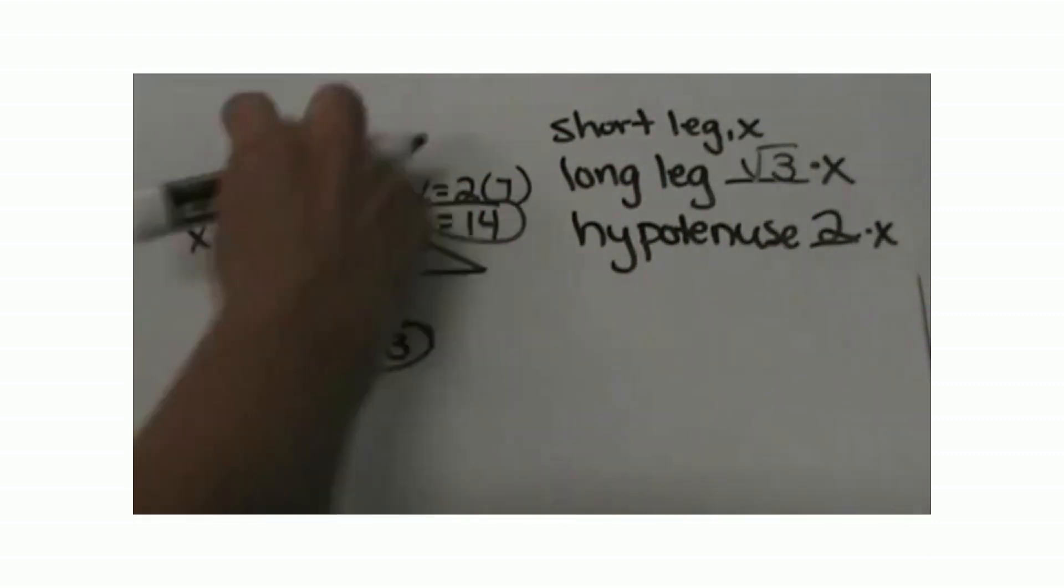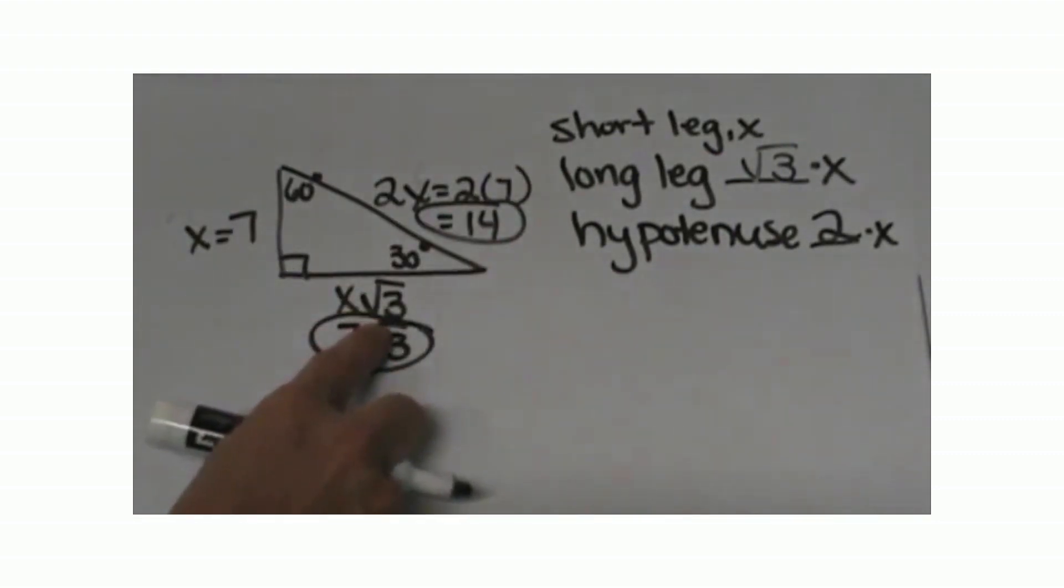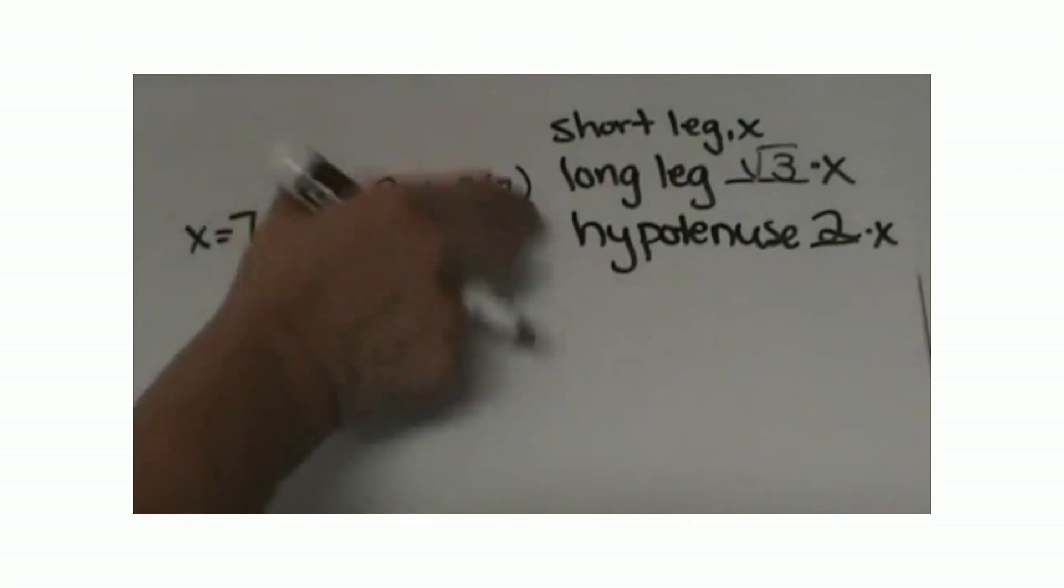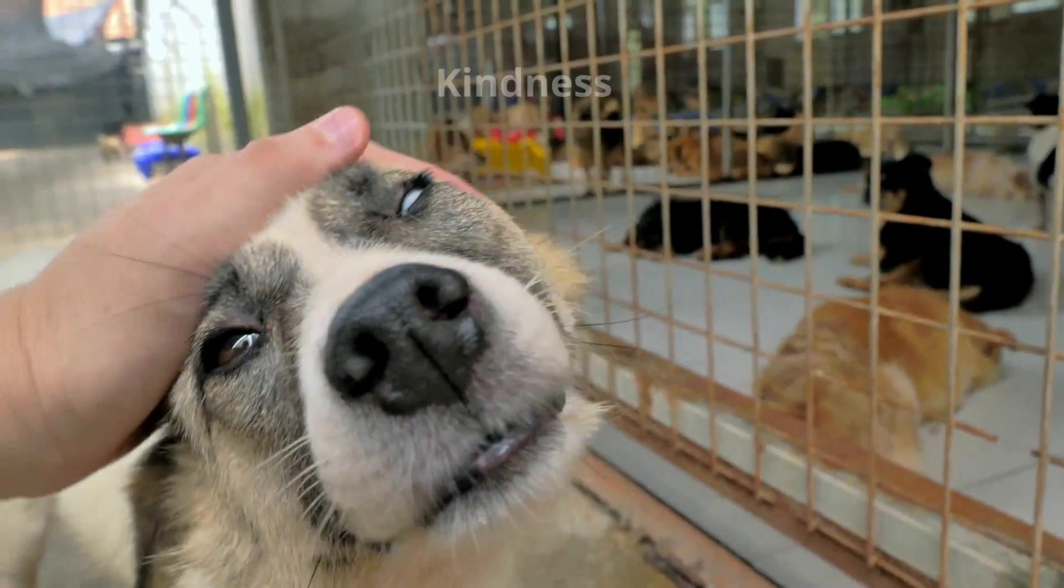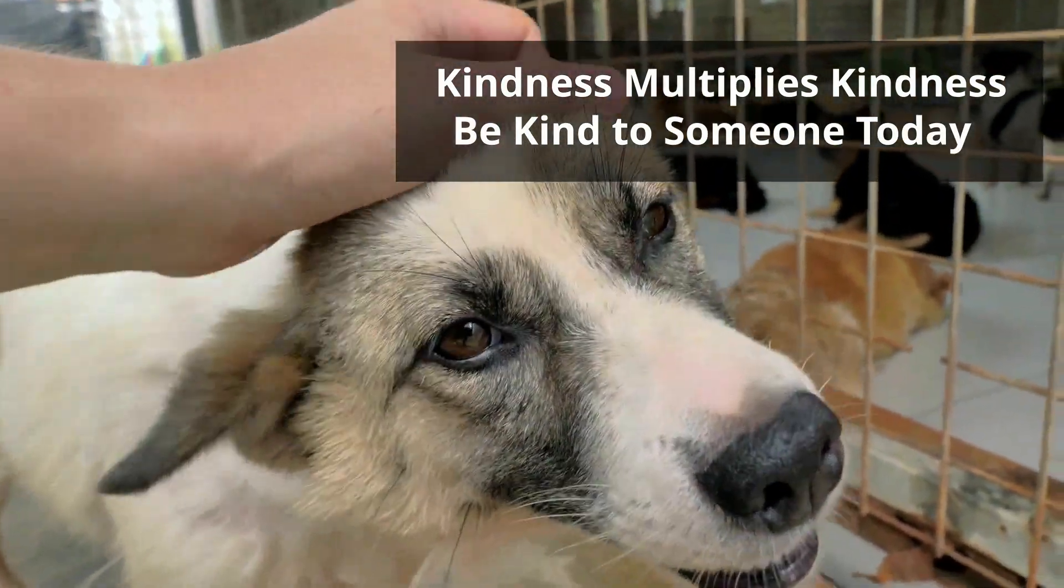This is the easiest way. If you have the short leg, you are just multiplying by the square root of 3 to get the long leg, and you are multiplying by 2 to get the hypotenuse.